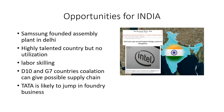There is a B10 and G7 countries coalition that can give a possible supply chain boost, reducing over-dependency on China. One fact I read a few days ago is that Tata is likely to jump into the foundry business in India — that is the most exciting news we are hearing right now.